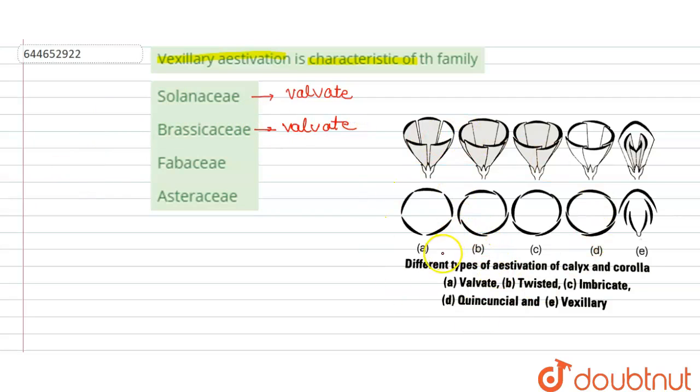the diagrams of the different aestivations. A is valvate, B is twisted, C is imbricate, D is quincuncial, and E is vexillary.